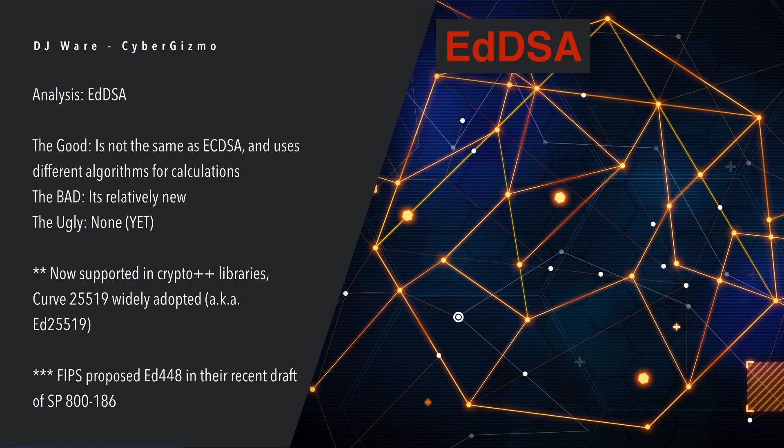Just to show how new EDDSA is — crypto++ only just added curve 25519 and some of the other EDDSA algorithms to the crypto libraries at the beginning of February of this year. When you're looking in the OpenSSH /etc/ssh directory, you may also see it listed as ED25519 — it's the same thing. NIST has proposed ED448 in their recent draft of SP800-186.